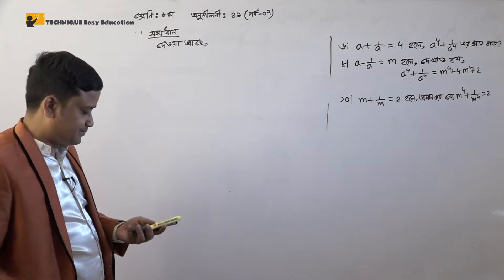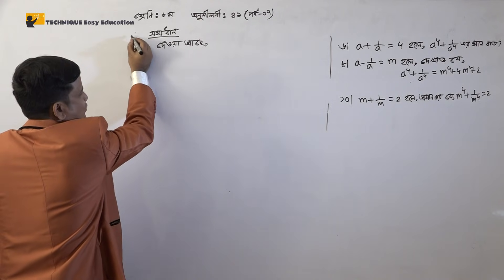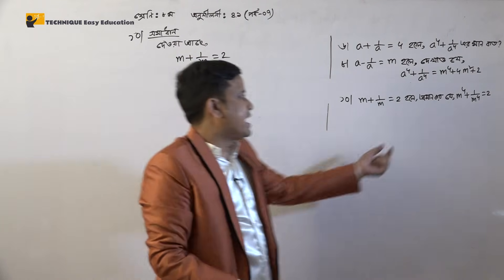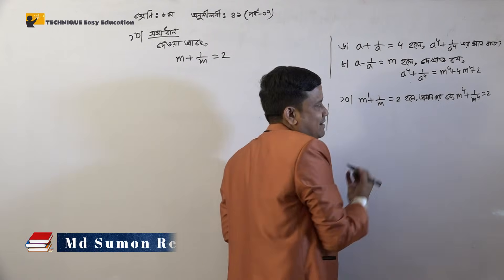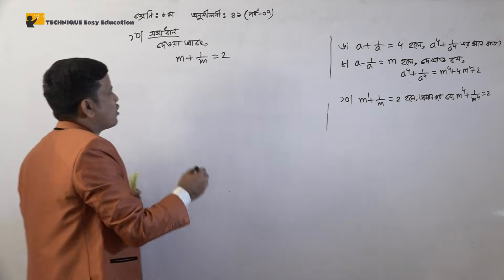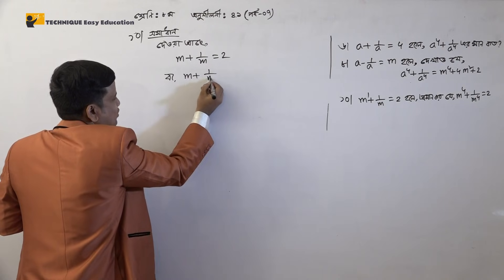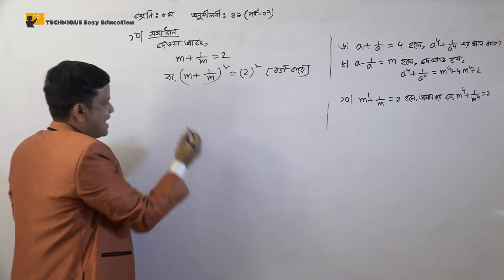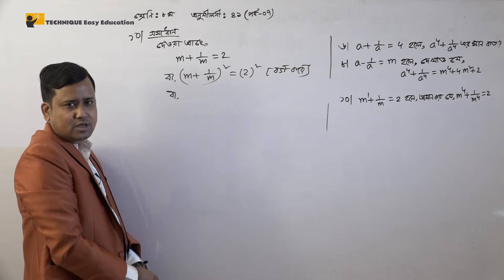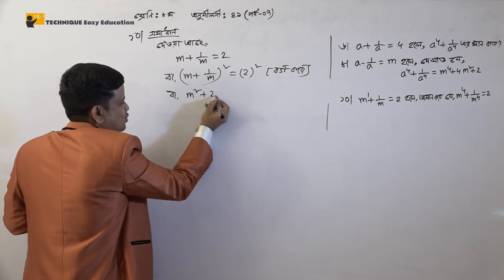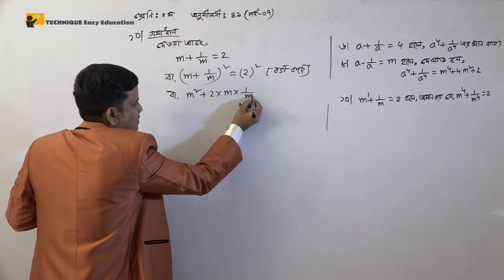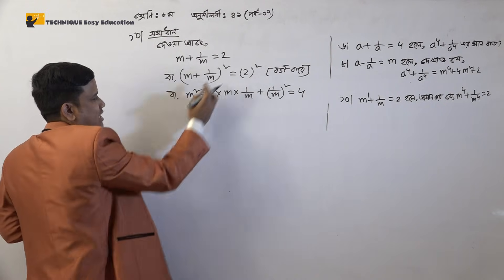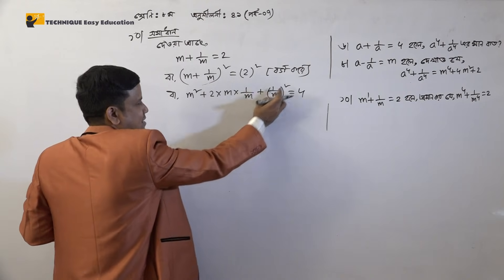I'm not covering what those say. M plus 1 by M is equal to 2, below A equal to 2. Take it: A power, A second. M plus 1 by M, holi square equal to 2. We can take A plus B holi square: A plus B holi square equals A squared plus 2AB plus B squared.